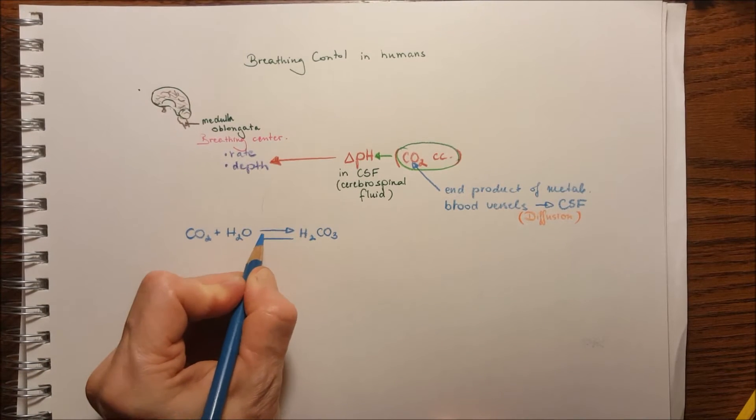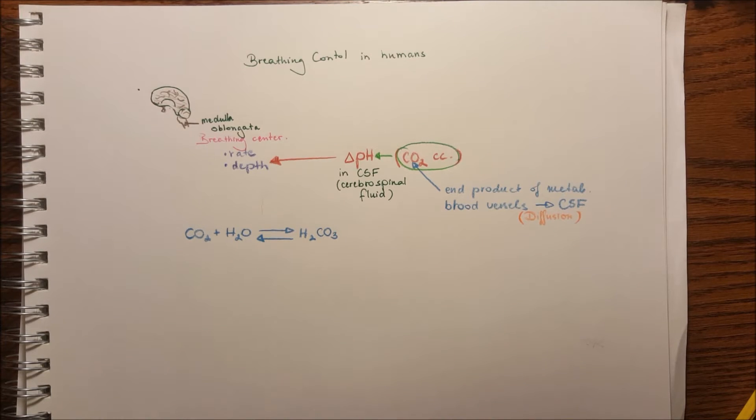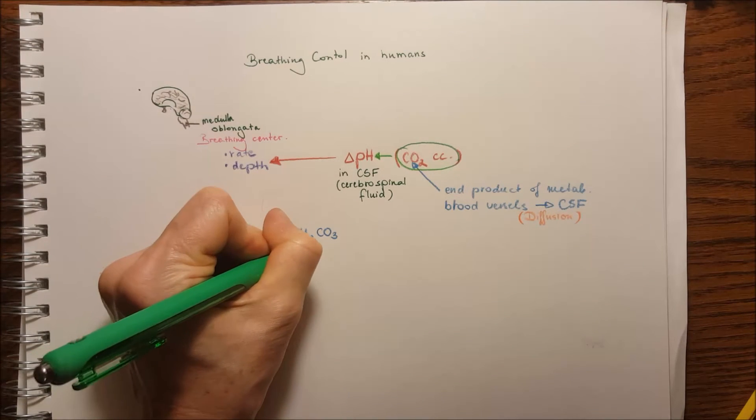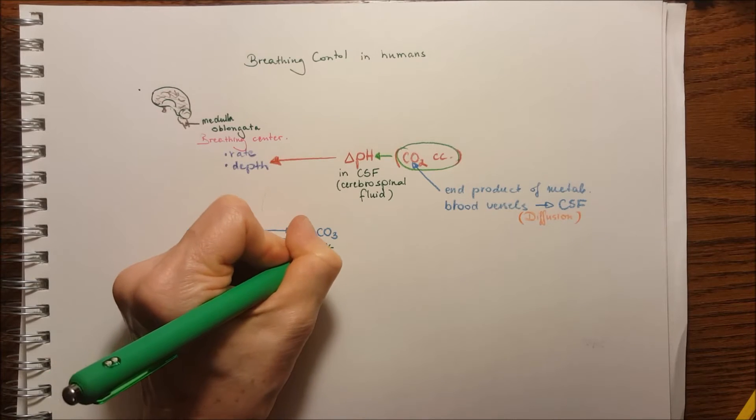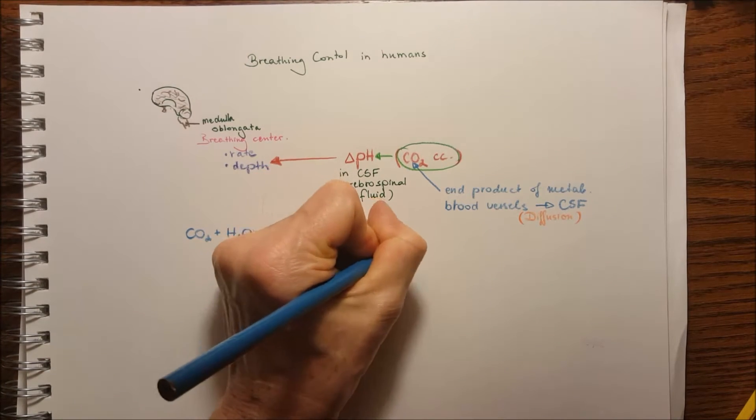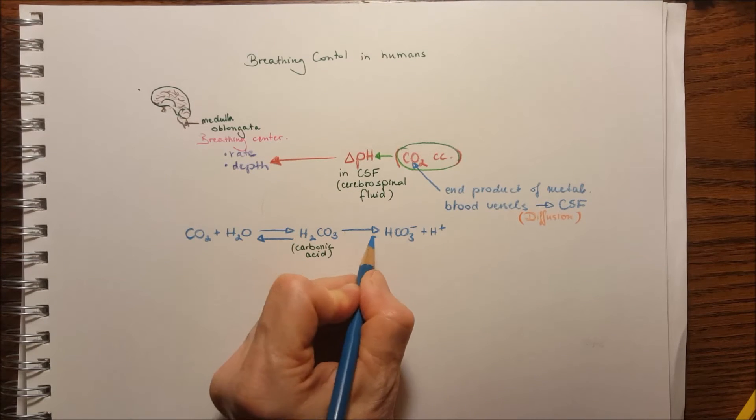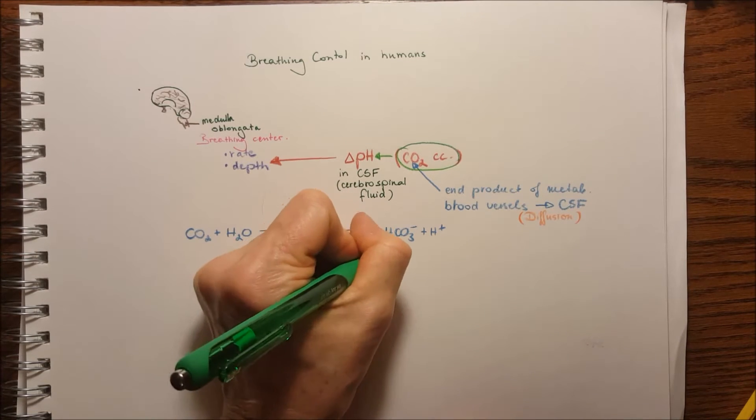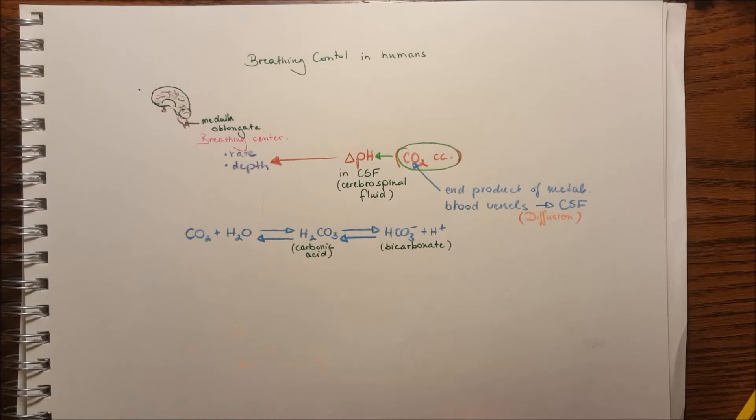This is an equilibrium. It's a weak acid, so it goes back and forth. It doesn't have a one-way reaction. The carbonic acid will dissociate into bicarbonate ion and a hydrogen ion.